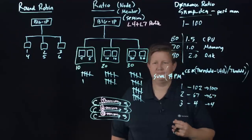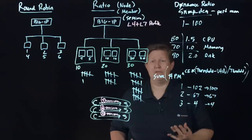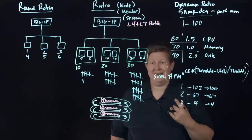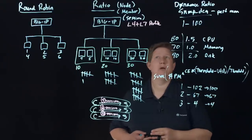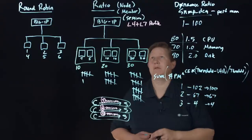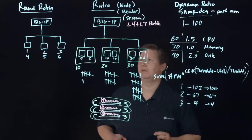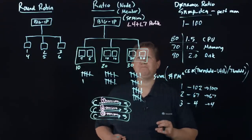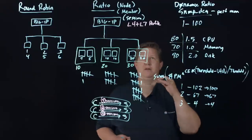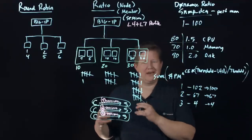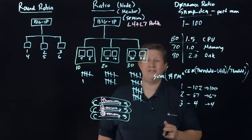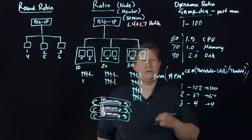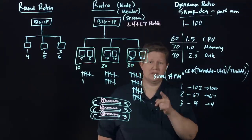We will have more of these load balancing algorithms in future videos, but that covers today: round robin, ratio, and dynamic ratio, and of course the ratio sessions which is a little bit different conceptually because it's not on the connection, it's on the layer 7 attribute of that. So if you enjoyed this video, click subscribe and we'll see you out there in the community.